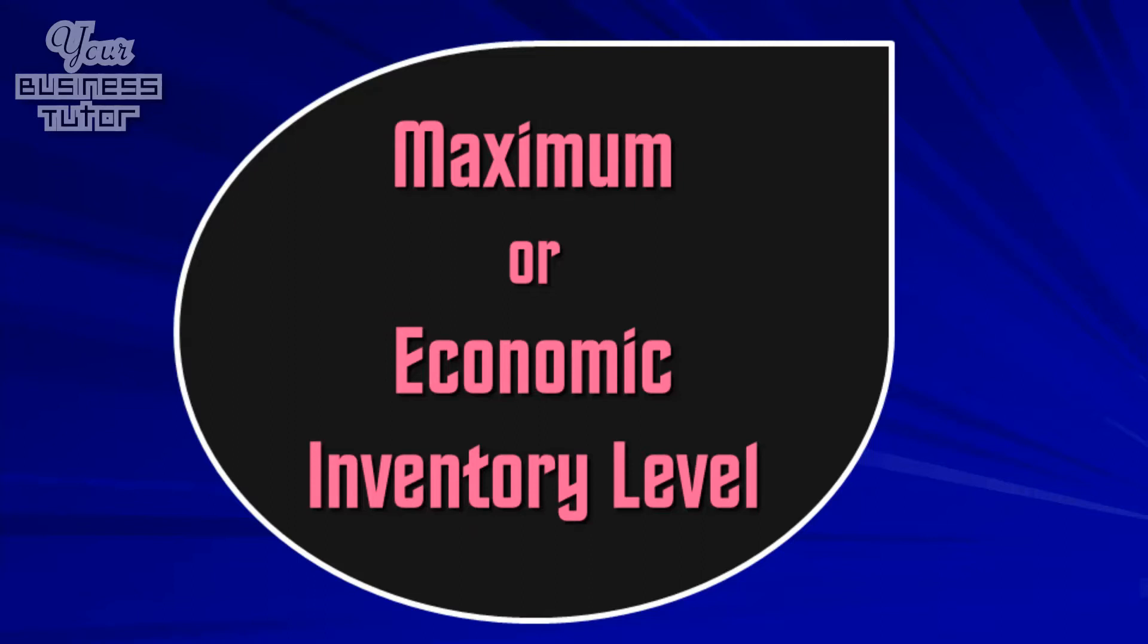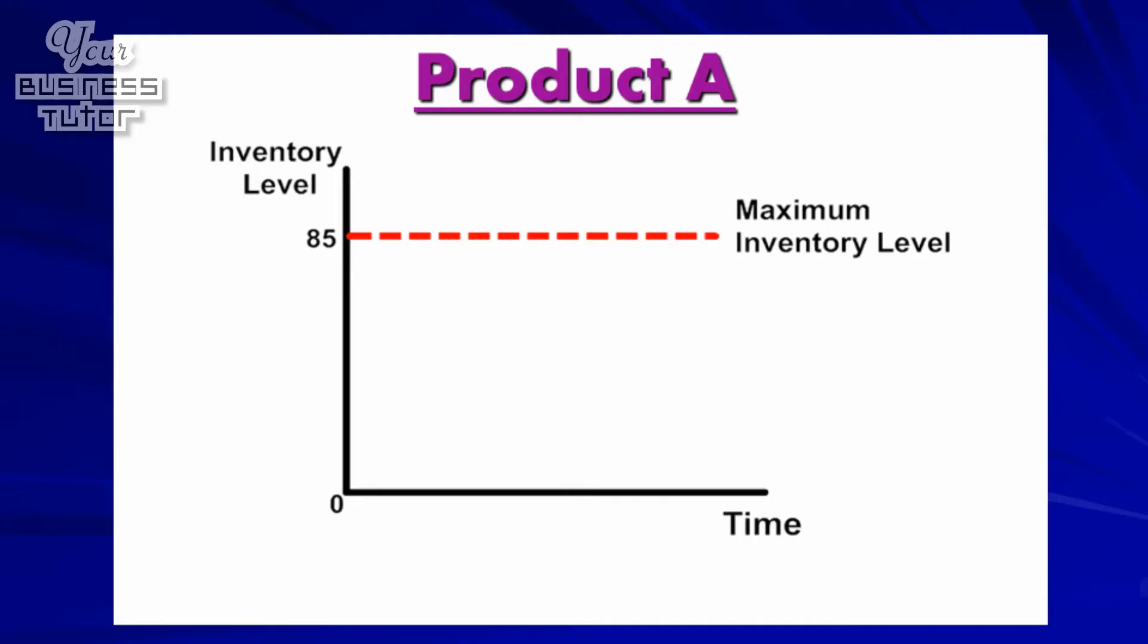To ensure this is achieved, a business must first determine appropriate stock levels for each item it holds. For example, the first part of this process is determining a high point, or the most an organization should hold of an item of stock, which is referred to as the maximum or economic inventory level. As such, for Product A, as the diagram shows, the maximum inventory level has been set at 85 items, which means the business should never hold more than that amount.